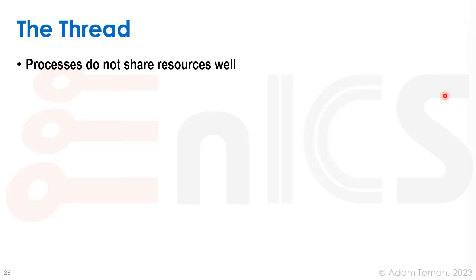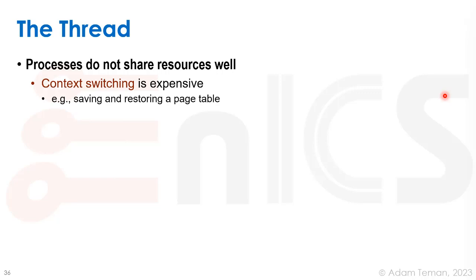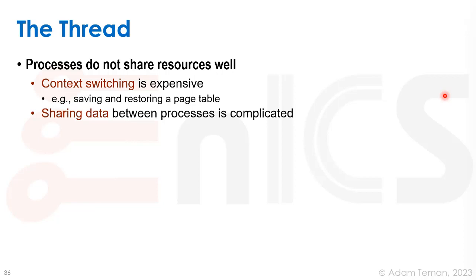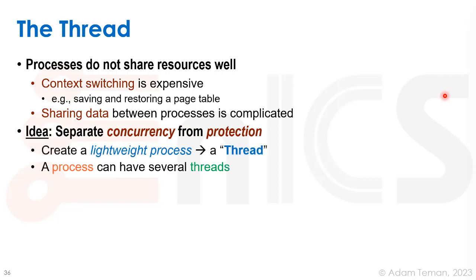Processes don't share resources, and context switching is expensive — saving and restoring the whole PCB, including page tables and large data structures. Sharing data between processes is really complicated because they have different memory maps. The idea is to separate concurrency from protection. We create a lightweight process — better known as a thread. Note that terminology is often misused: process, thread, and task can mean different things across systems, but the basic definition of a thread is a lightweight process.